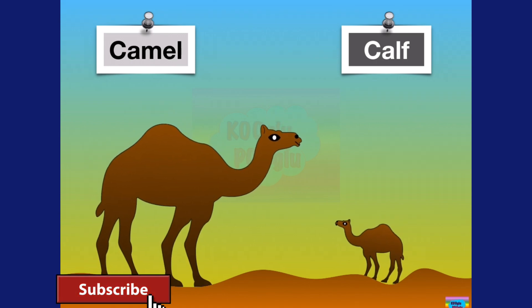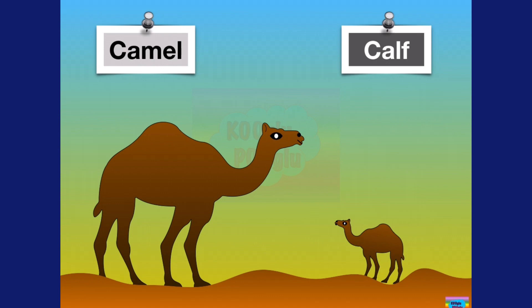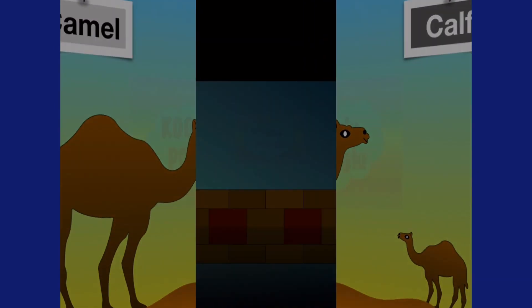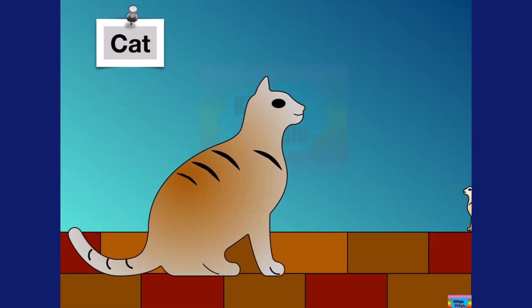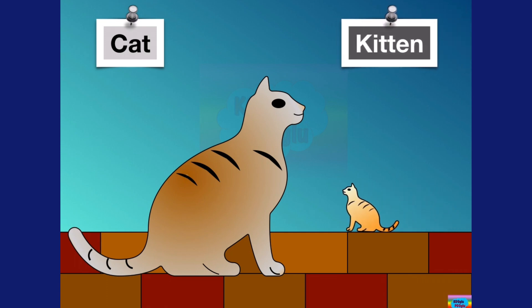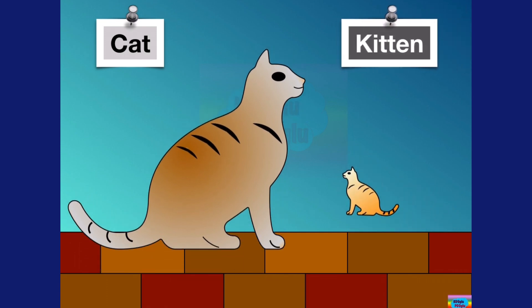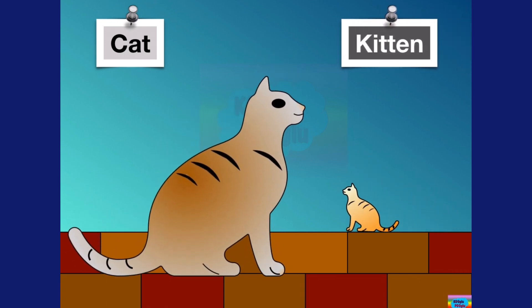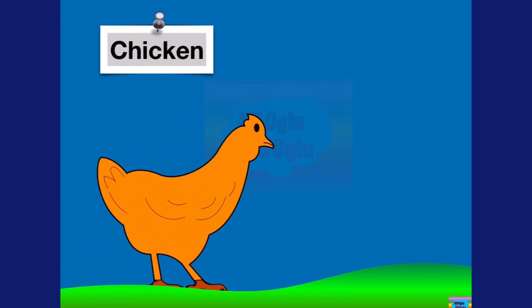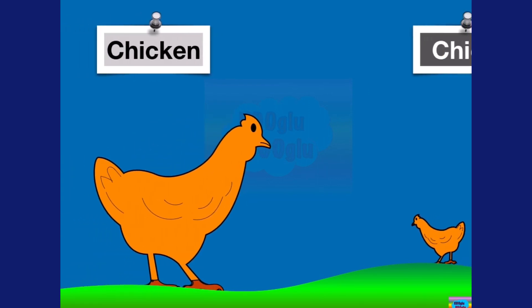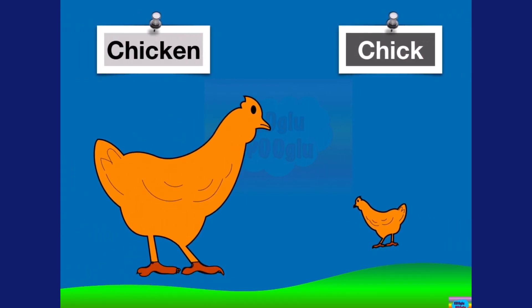Here we got a camel, and the baby of a camel is called a calf. Here we got a cat, and the baby cat's called a kitten. Here we got a chicken, and a baby chicken is called a chick.